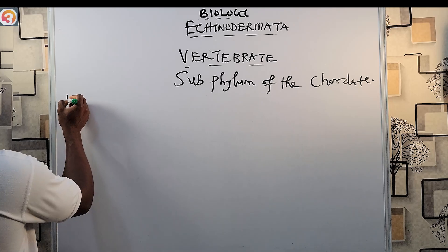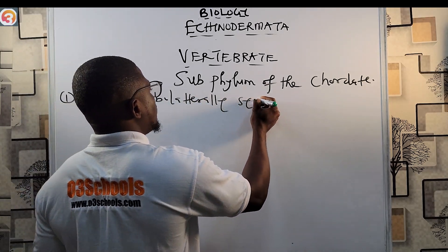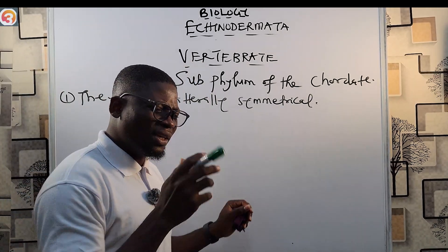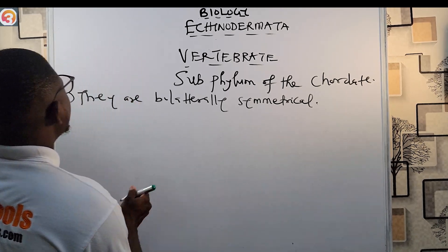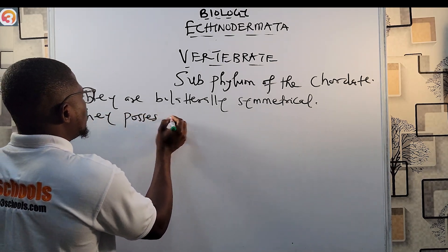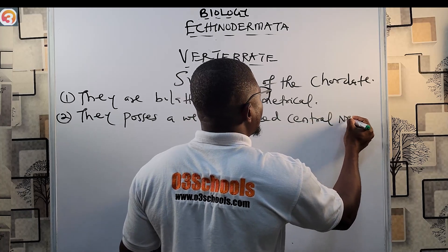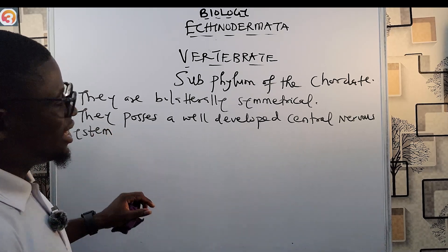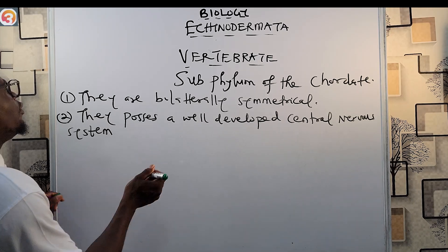One characteristic is that they are bilaterally symmetrical — they can be cut in only one plane into two identical halves. Another characteristic is that they possess a well-developed central nervous system. They also have well-developed sensory organs.